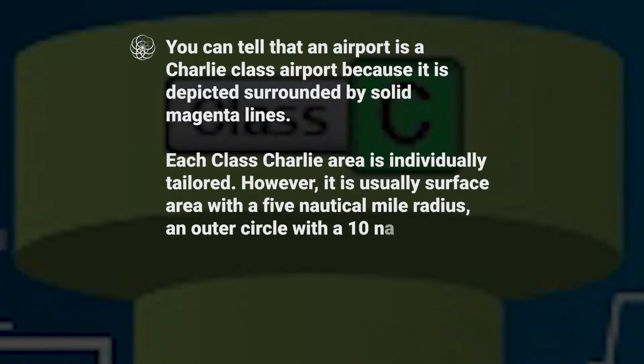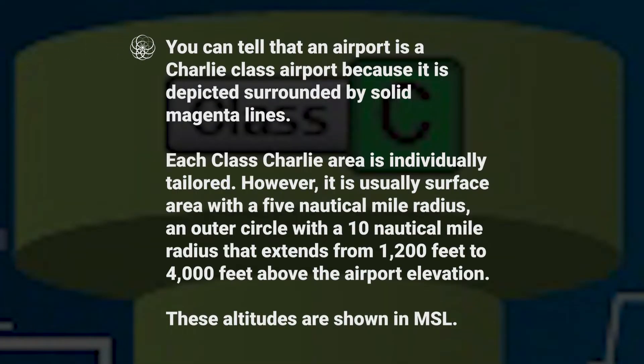You can tell an airport is Class Charlie airspace because it's depicted surrounded by solid magenta lines. Each Class Charlie area is individually tailored. However, it's usually a surface area with a 5 nautical mile radius, and an outer circle with a 10 nautical mile radius that extends from 1,200 feet to 4,000 feet above the airport elevation. These altitudes are shown in MSL.